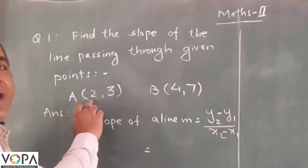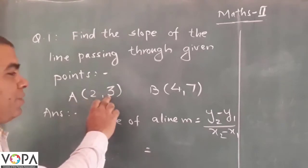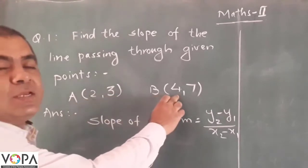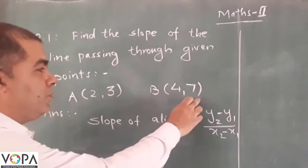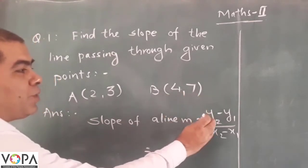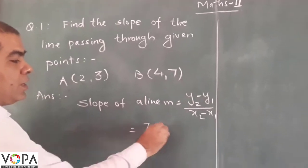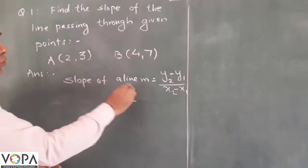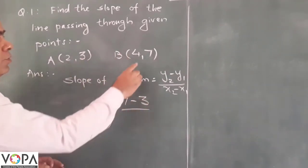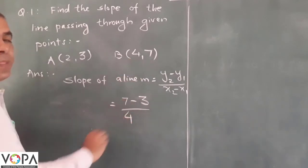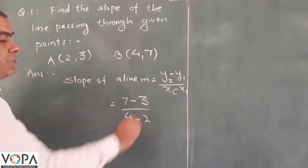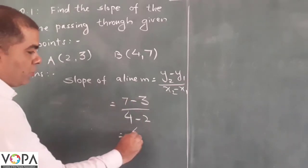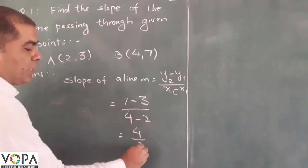Point A is shown by coordinates (x1, y1) and point B is shown by coordinates (x2, y2). Now, y2 is 7 and y1 is 3, upon x2 which is 4 and x1 which is 2. 7 minus 3 equals 4, and 4 minus 2 equals 2.